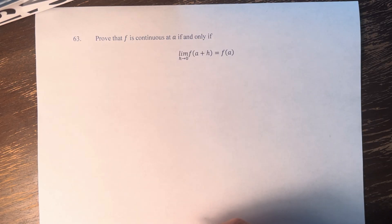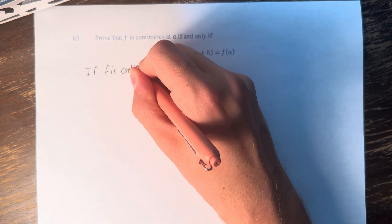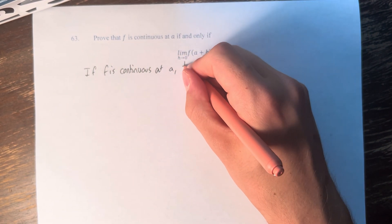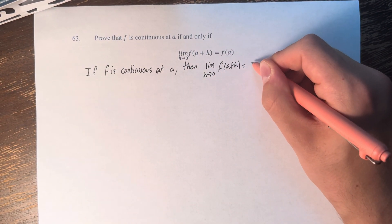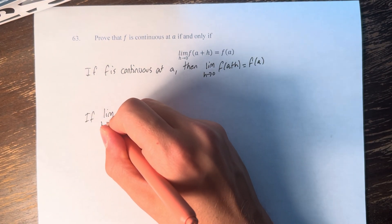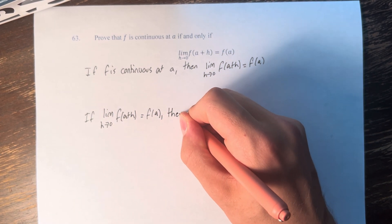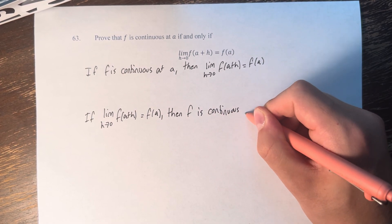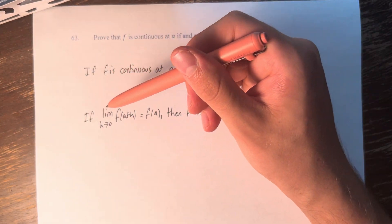In order to do this, what we need to prove is that if f is continuous at a, then the limit as h approaches 0 of f of a plus h equals f of a. We also need to prove if the limit as h approaches 0 of f of a plus h is equal to f of a, then f is continuous at a. Because this is saying if and only if, we need to prove if this then that, and if that then this.